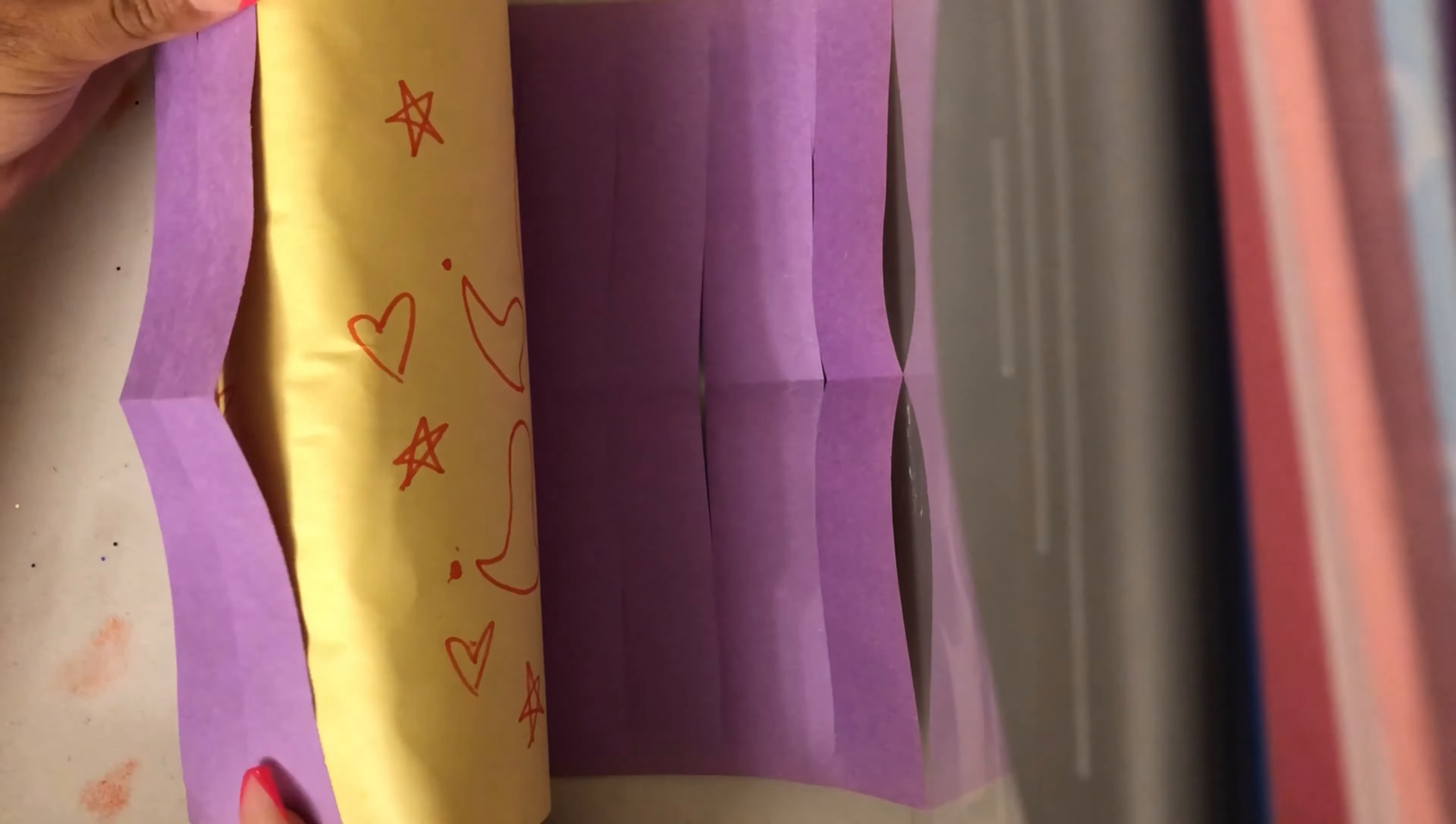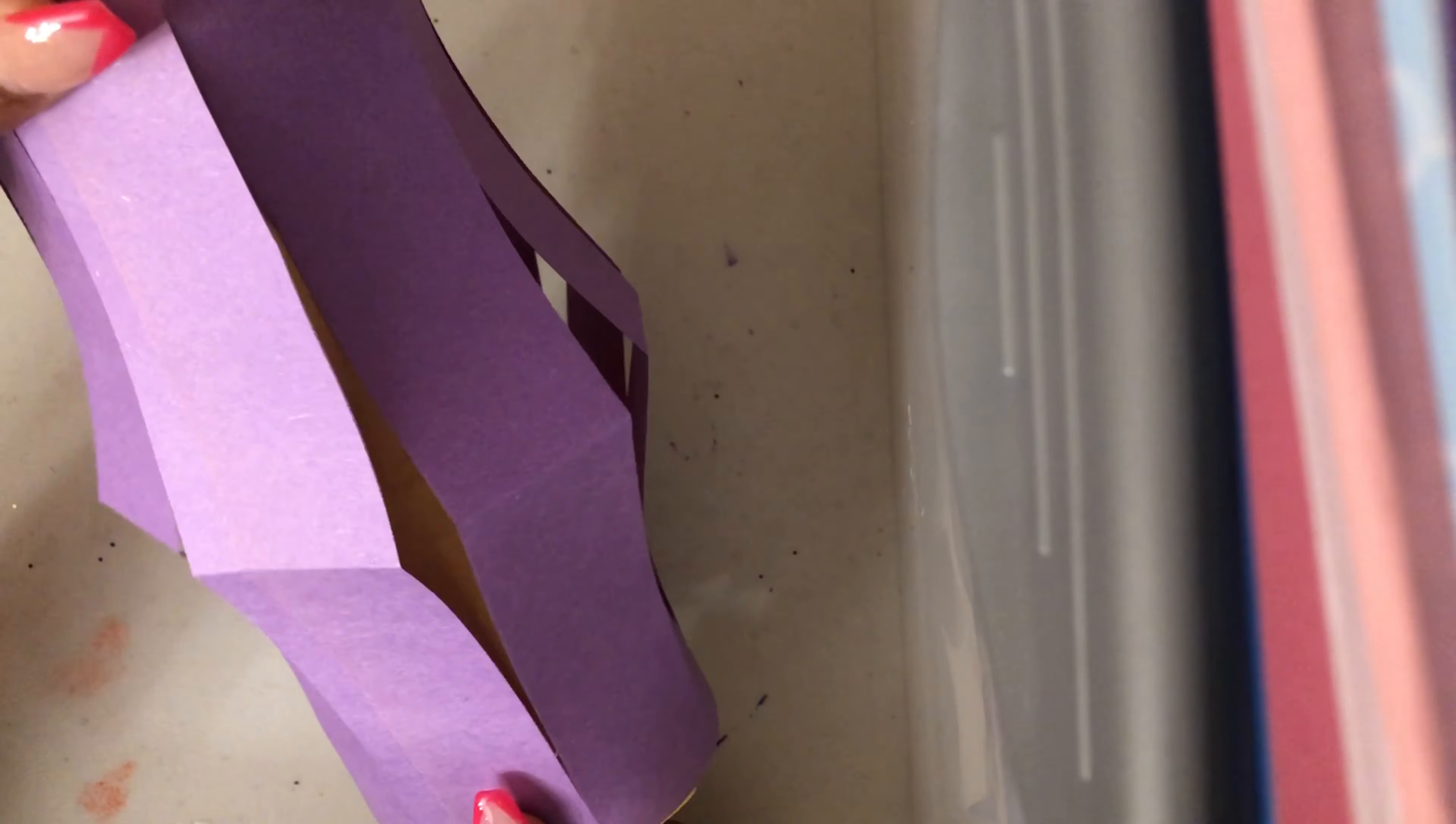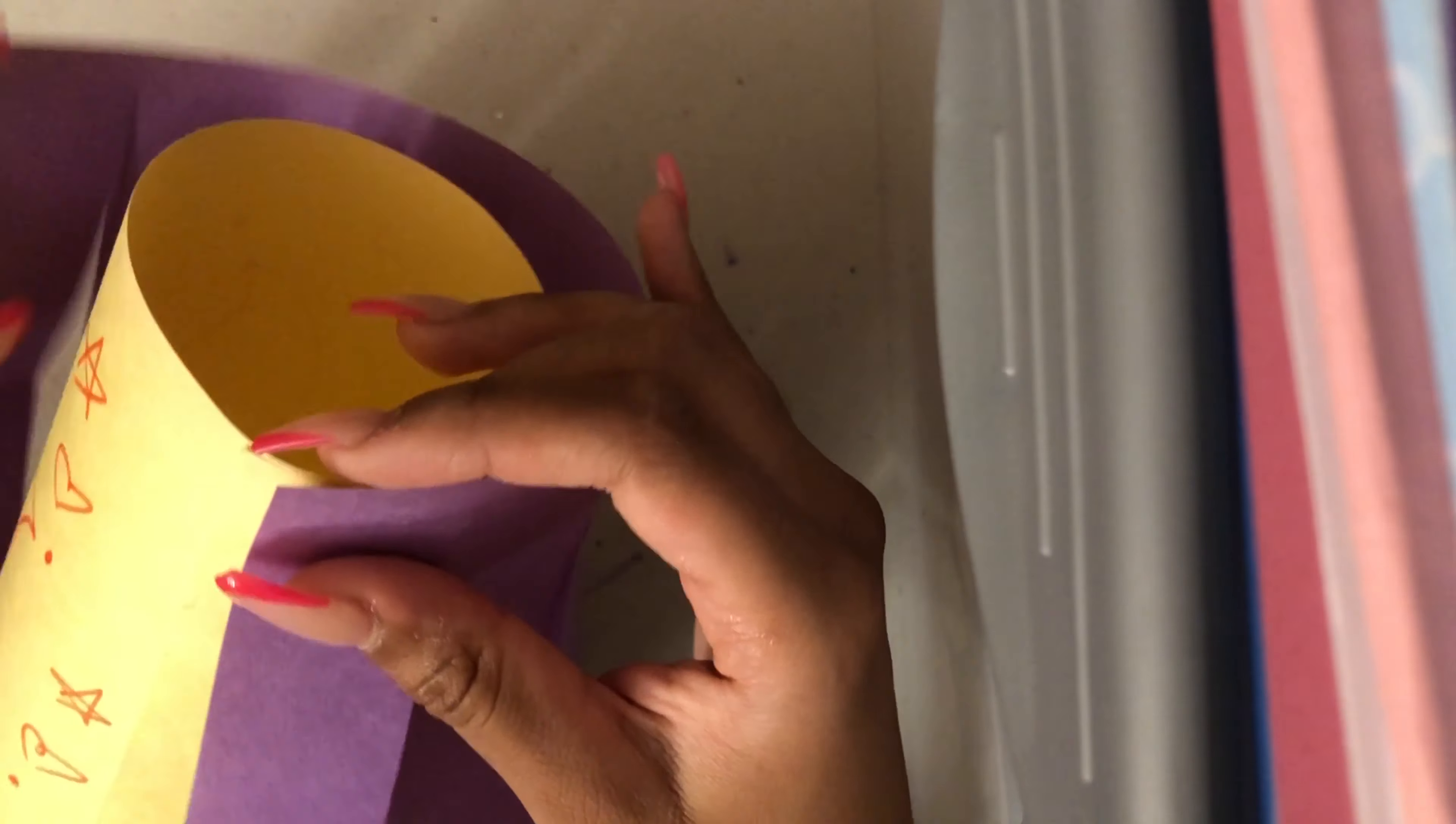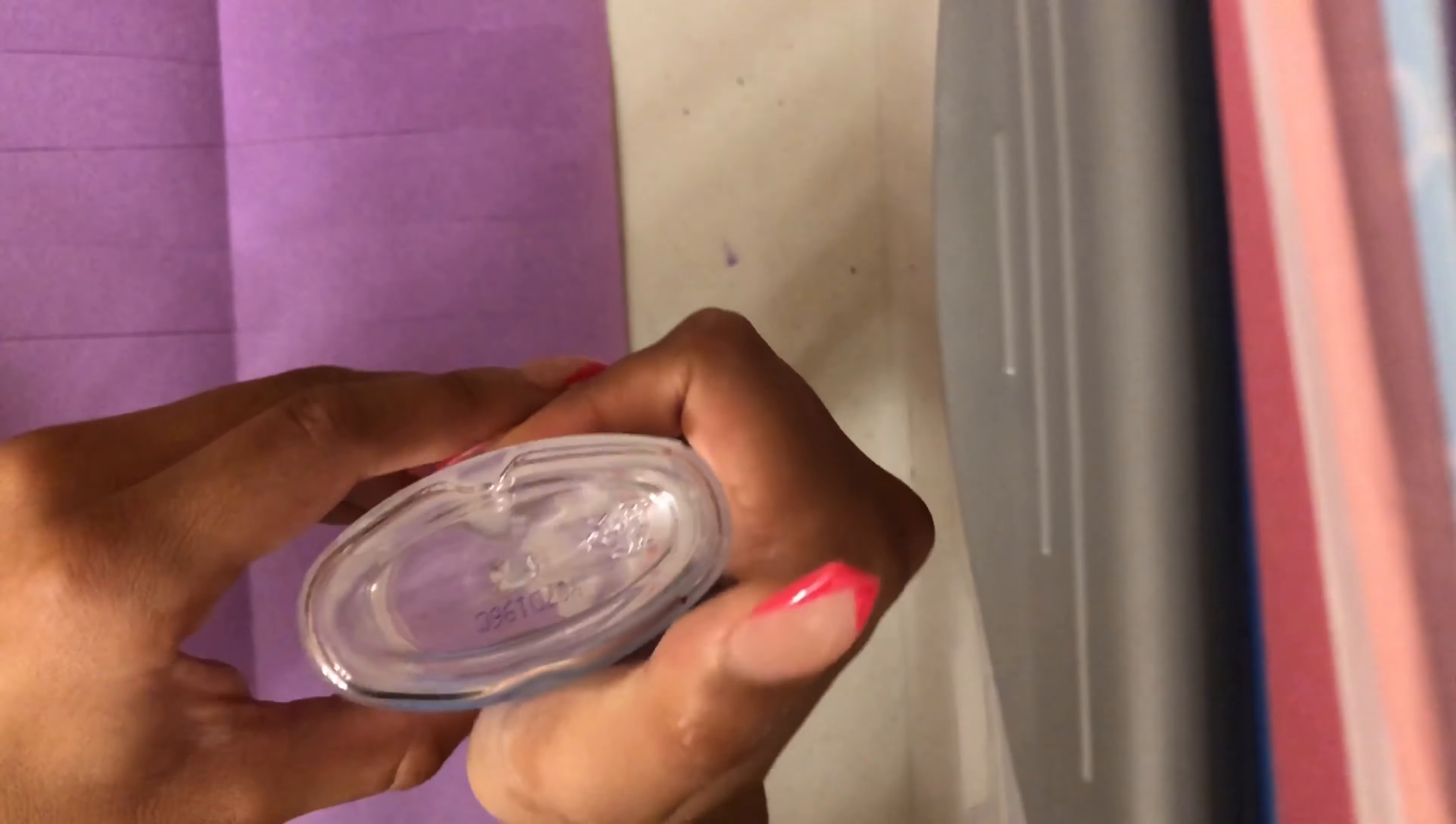Then I mapped out where I wanted to place my outermost layer onto the design we created. You'll see I'm mapping out where I'm going to glue it, and once I figure out where I want to position it, I'll take it off.